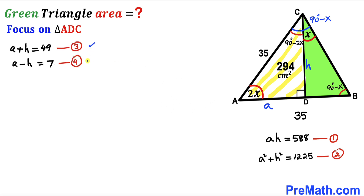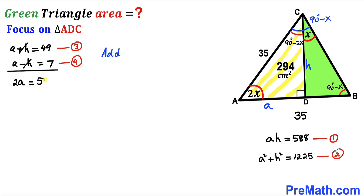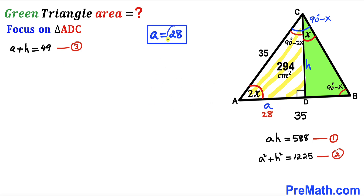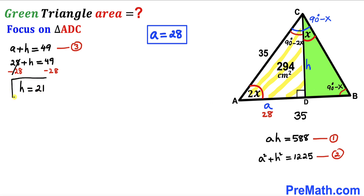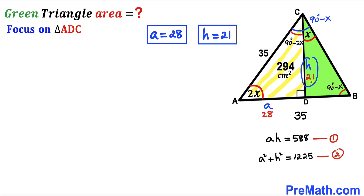Adding equations three and four: the h terms cancel, giving 2a = 56, so a = 28 centimeters. Substituting a = 28 into equation three: 28 + h = 49, so h = 21 centimeters.